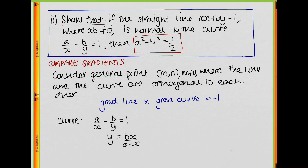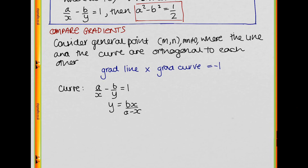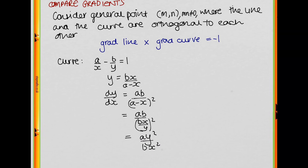Consider the quotient rule and then substituting back in to get the gradient in terms of x and y, as we did before. Working out dy/dx, we get dy/dx = ab/(a - x)². We know that (a - x)² can be written as (bx/y)², so substituting gives dy/dx = ay²/bx², which is the same as the previous curve but positive (opposite sign).